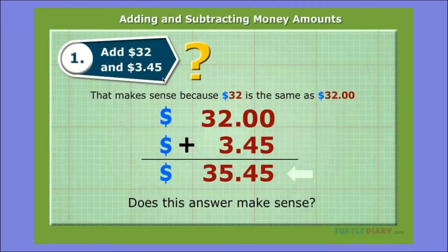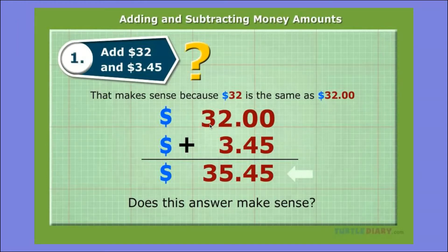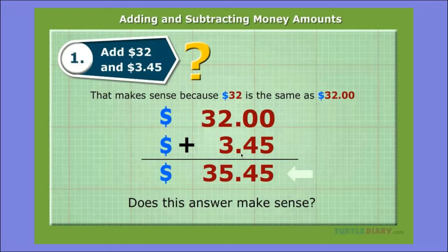Here's an example: we need to add thirty-two dollars and three dollars and forty-five cents. Thirty-two dollars is the same as thirty-two dollars and zero cents, so there's a zero in the hundredths place, a zero in the tenths place, a two in the ones place, and a three in the tens place. The value being added is three dollars and forty-five cents: the five goes in the hundredths place, the four in the tenths place, and three dollars in the ones place.